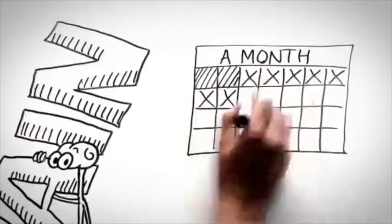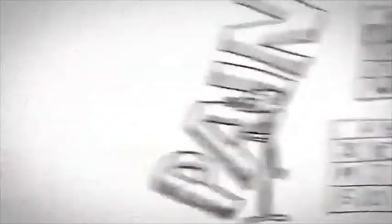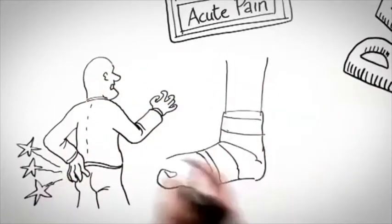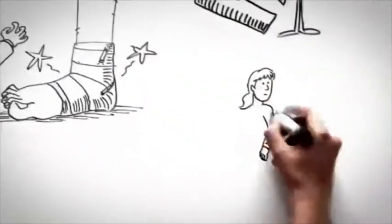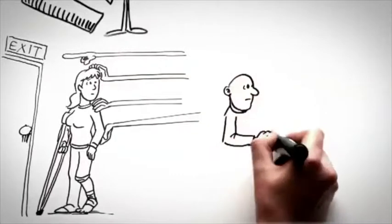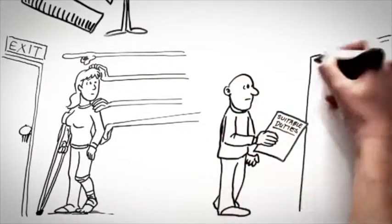You might have had it for a few weeks or months. This is called acute pain, and it's common with tissue damage, say from a back injury or ankle sprain, and generally you'll be encouraged to stay active and gradually get back to doing all your normal things, including work.